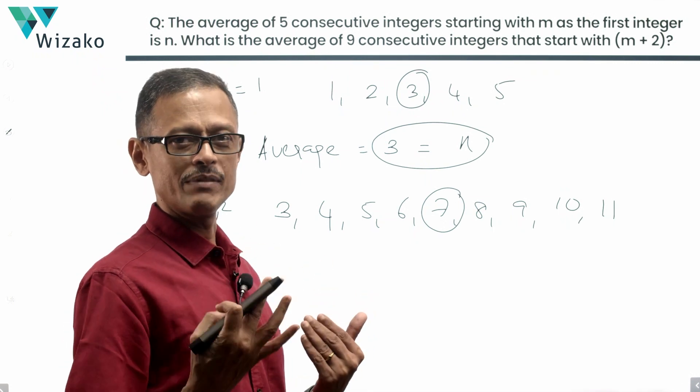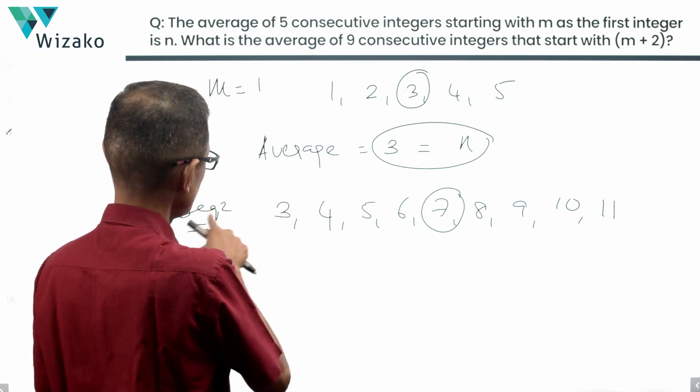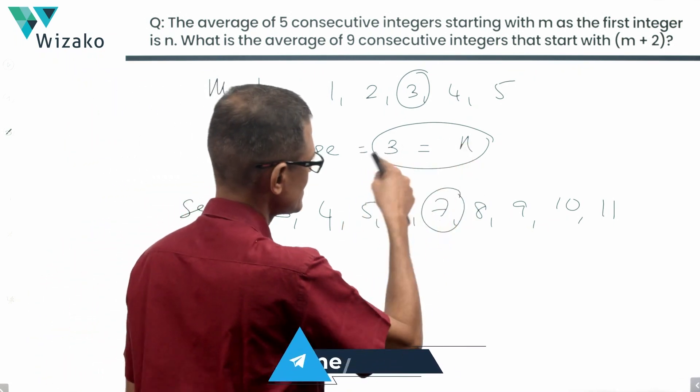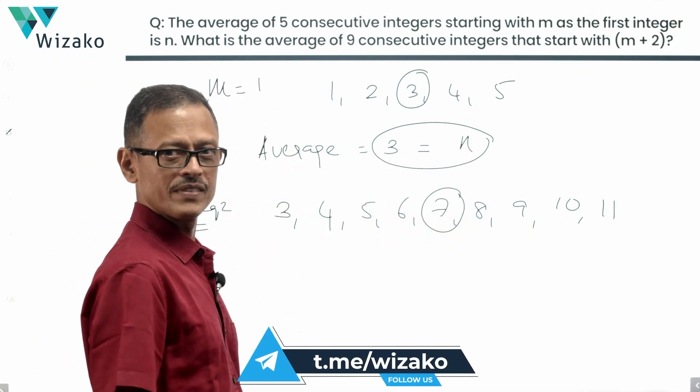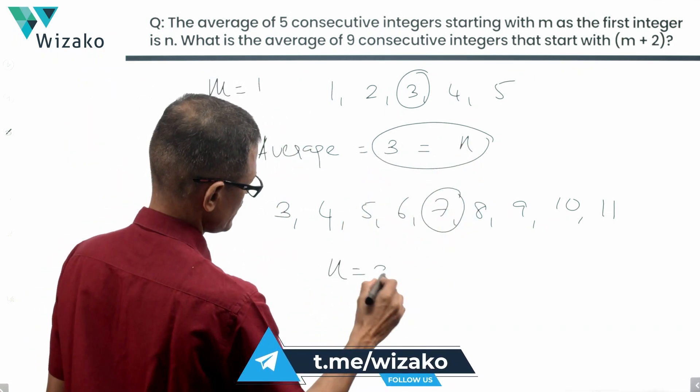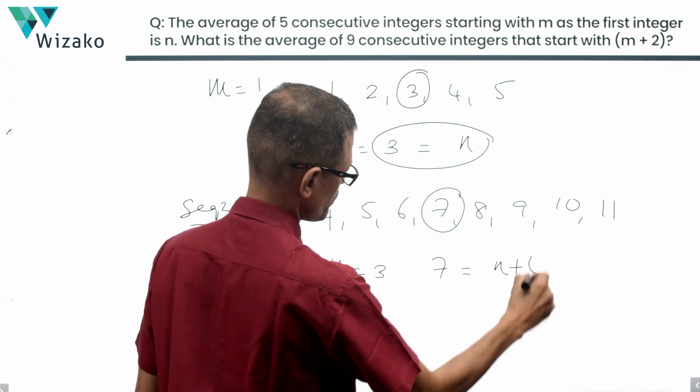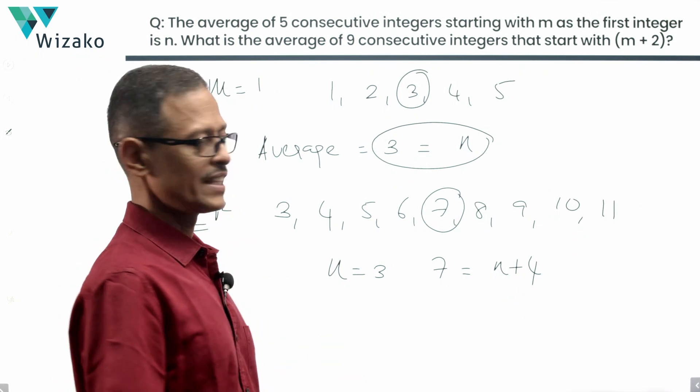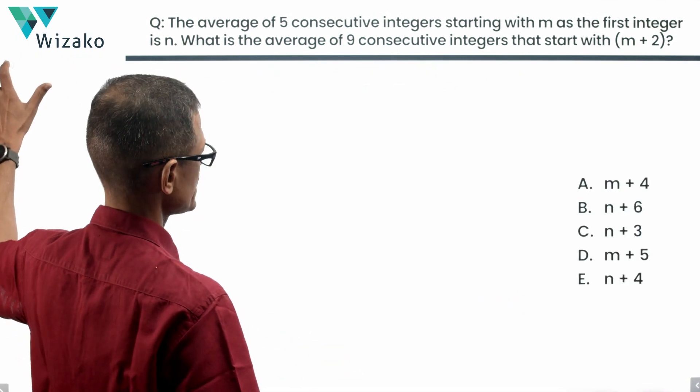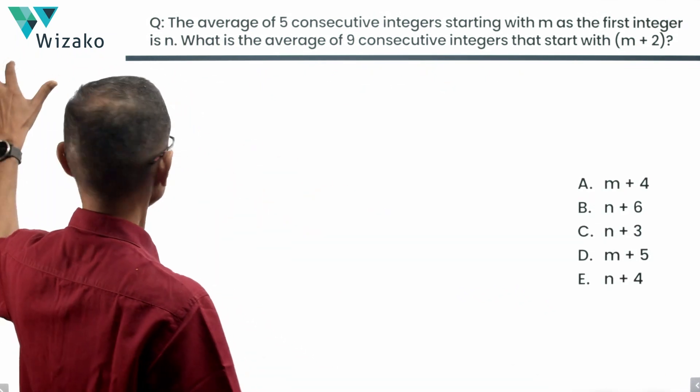But everything is asked in terms of m and n. m is equal to 1. m plus 2 is equal to 3. If n is 3, what is going to be 7? n is equal to 3. Therefore, 7 is equal to 4 more than that. That's going to be equal to n plus 4. So the average of the second sequence is equal to n plus 4. What's the correct answer? Answer choice E is the correct answer to this question.